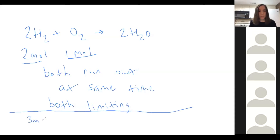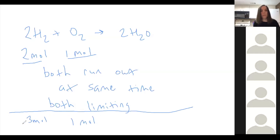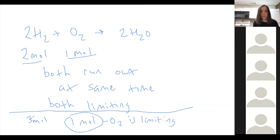If instead we had three moles of H2 and still one mole of O2 — for every one mole of O2 we need two moles of H2. If we have one mole of O2, we only need two moles of H2, but we have three. So we're going to have extra H2 left over. O2 limits in this case, and H2 is excess. We'd use two moles of H2 and have one left over, but all the O2 would be used up.